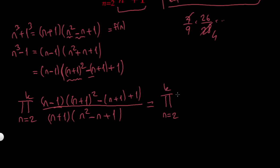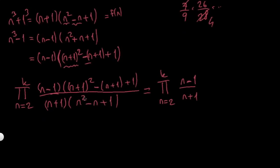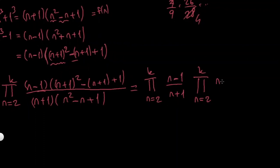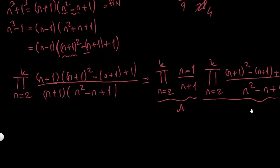Since the product is finite, I can separate it into two parts. Part A is the product from n=2 to k of (n−1)/(n+1), which is similar to the telescoping example I showed. Part B is the product from n=2 to k of (n²+n+1)/(n²−n+1). Let's label these A and B and compute them separately.